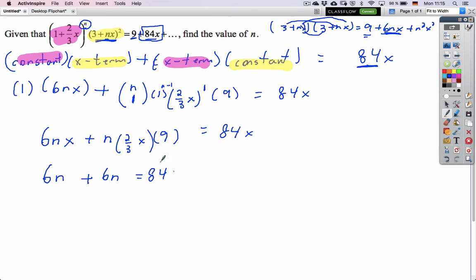2/3 of 6, and the x's can be ignored because when you collect the like terms, we just really want to be comparing with this coefficient here. So now you have a simple linear equation, 12n equals 84, so divide both sides by 12, and you get n equals 7.